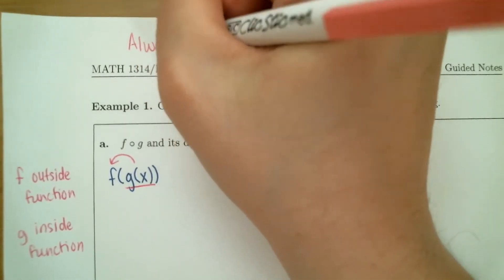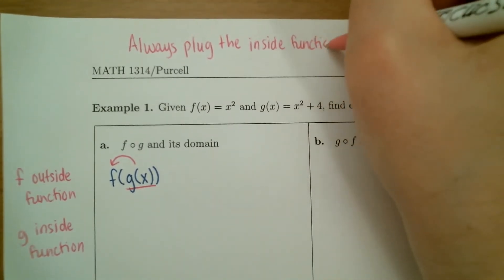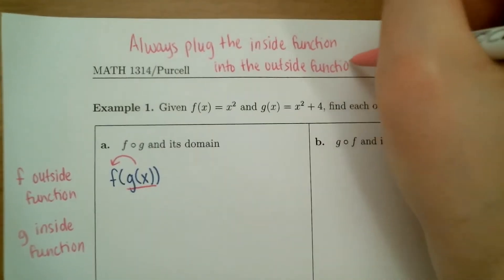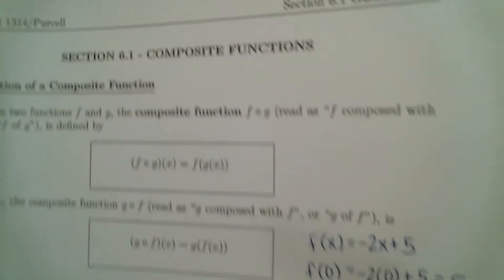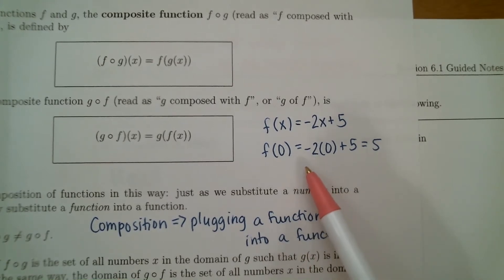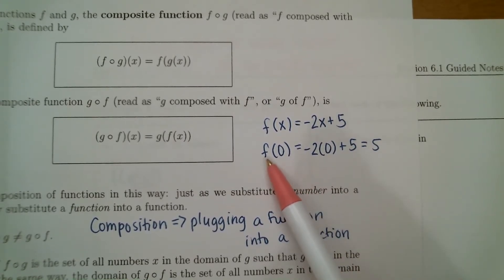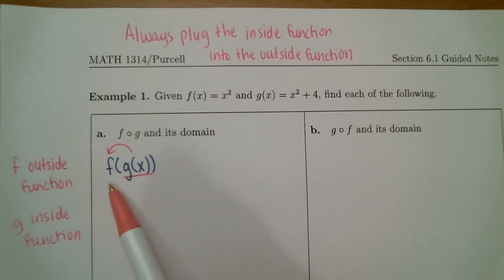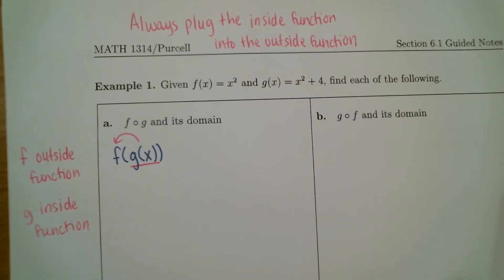We always plug the inside function into the outside function. Think back to working with a function and plugging in a number — whatever's in parentheses, that's what you're plugging in. So whatever's on the inside, that's what you're plugging in. In this case, we're going to be plugging the function g into the function f.